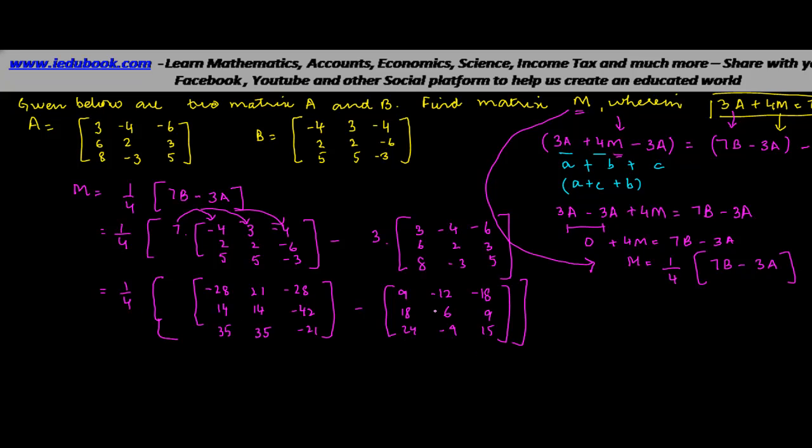So you have now simply got this in the form of 2 matrices. As you solve this, 1 upon 4. Minus 28 minus 9 is going to give you minus 37. 21 minus minus 12 is going to give you, minus minus plus, so this will give you 33. Minus 28 minus minus 18 is going to plus 18, so this will give you minus 10. You can independently solve each of these values. 14 minus 18, minus 4. 35 minus 24, 11.